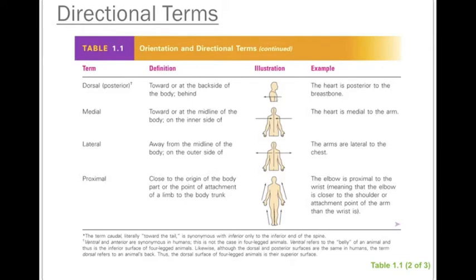The next two opposite terms are 'medial' and 'lateral.' Medial sounds like 'middle' and that's what it means — toward or at the midline of the body. For example, the heart is medial to the arm. On the opposite side, 'lateral' means away from the midline of the body. For example, the arms are lateral to the chest, as they are further outside or away from the middle.